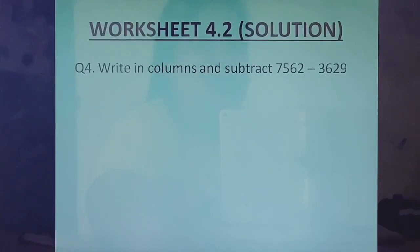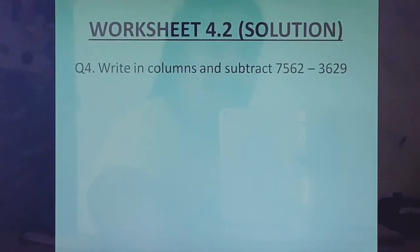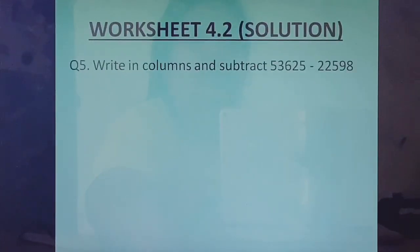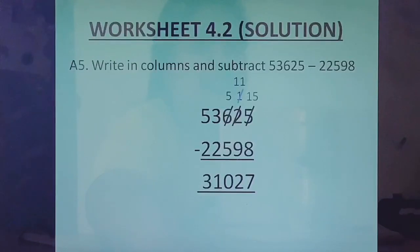Question 4: Write in columns and subtract. Here we had to write the numbers one below the other before subtracting — that was one more step added for us. When you write them one below the other and subtract, the answer you will get is 3933. Question 5: Write in columns and subtract. The answer is 31027.